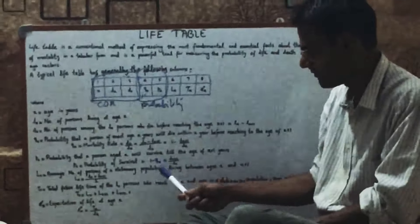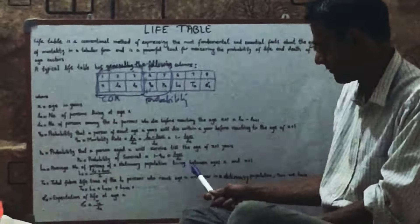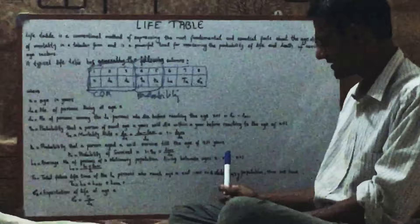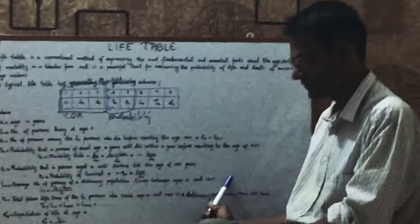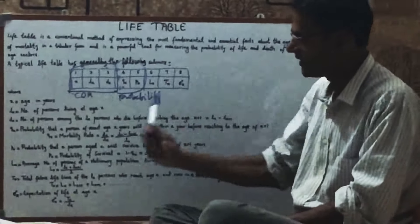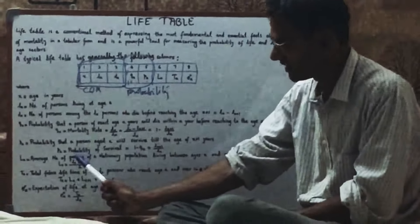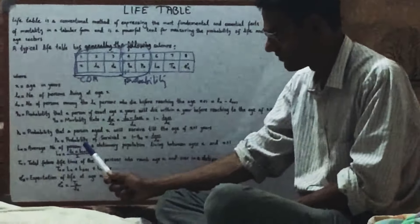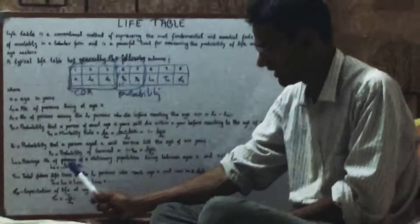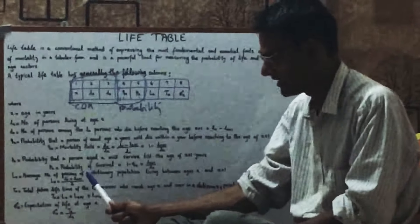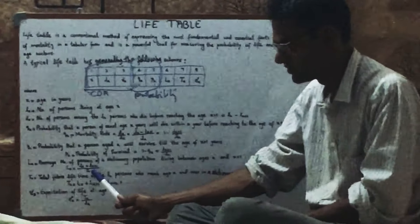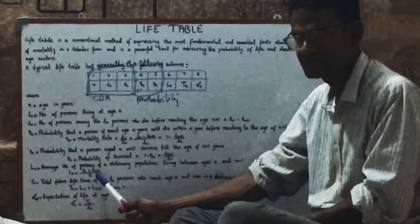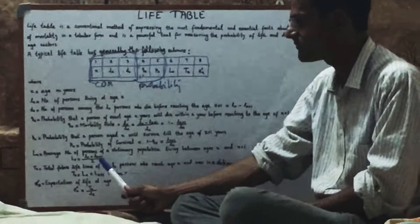LX represents the average number of persons in a stationary population living between ages X and X plus 1, and it is calculated as LX plus LX plus 1 divided by 2, using the average formula.